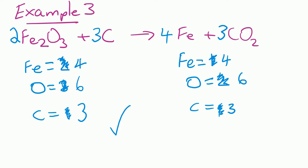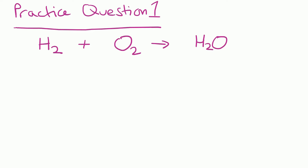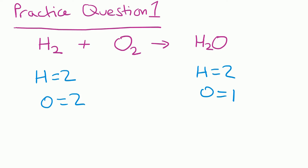Here's a practice question — pause the video, have a go on a piece of scrap paper, and then resume to check your answer. We've got two Hs on each side and two Os on the left but one O on the right. To balance, we put a two in front of H2O, giving us two Os. That also means we now have four Hs on the right, so we put a big two in front of H2 on the left. Final check: four Hs on each side, two Os on each side. That one's balanced.